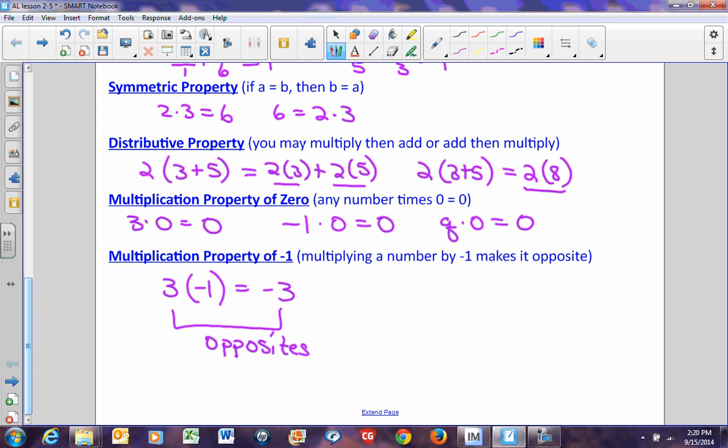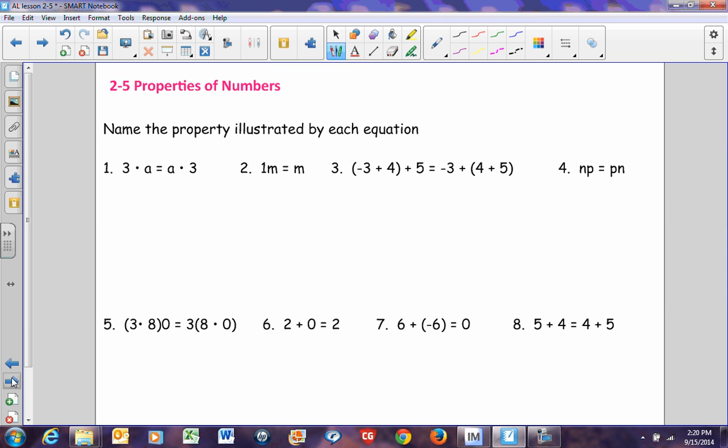Now, with most of these properties, what we are trying to do is we're trying to make sure that we can identify them. We can determine what something is by looking at it. So we name the property illustrating. If we look at this first example, 3 times a equals a times 3. There are no parentheses, so we know it can't be the associative property. We didn't change anything that's grouped because there is nothing grouped. Did we change the order? We had 3 and then a. Now we have a and then 3. Yeah, we changed the order. So it's the commutative property.